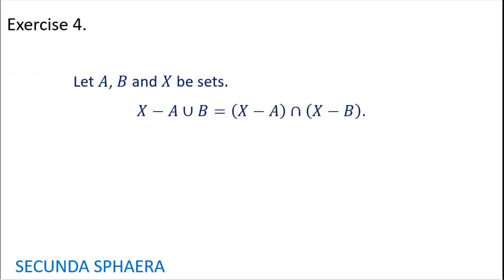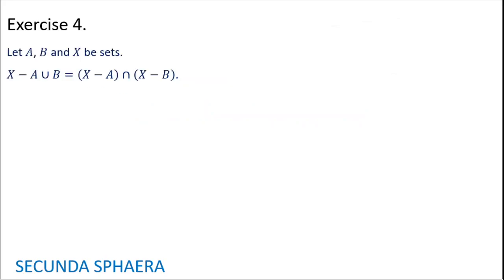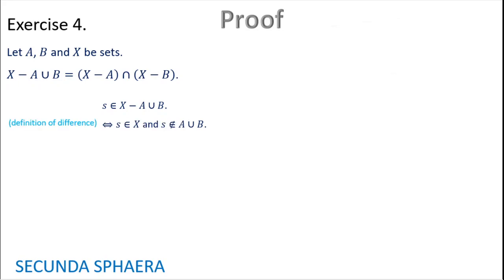Moving on to exercise number 4. Let A, B, and X be sets. It is needed to prove that X without (A union B) is equal to the intersection of (X without A) and (X without B). If you want to, give it a try. Or you are free to continue with the video. This is an equality of sets, so we are going to prove it by equivalences.